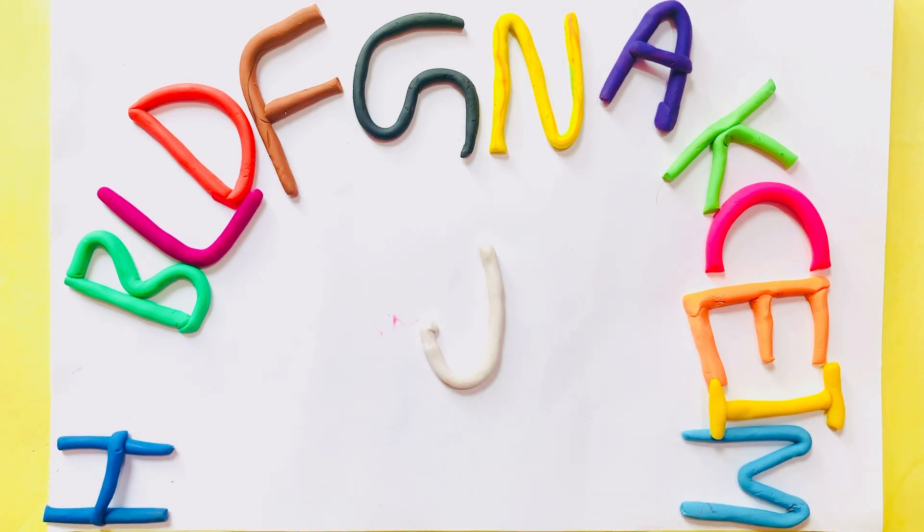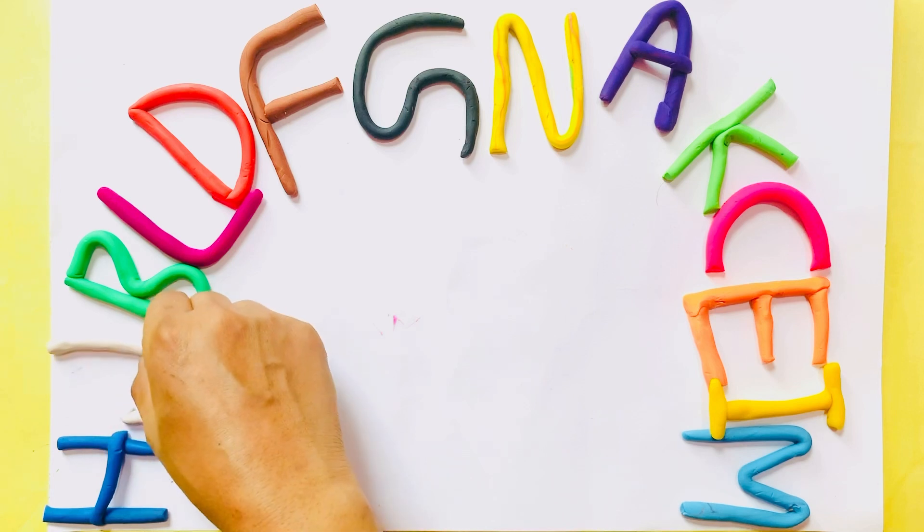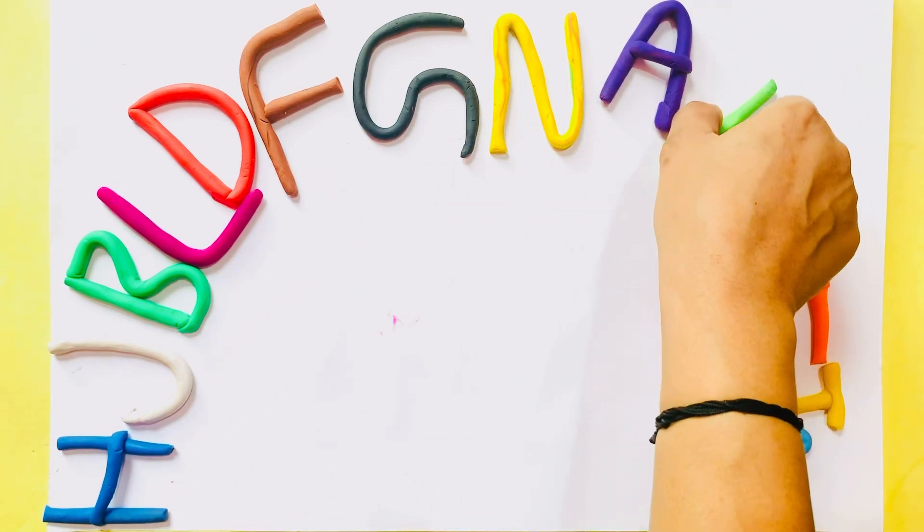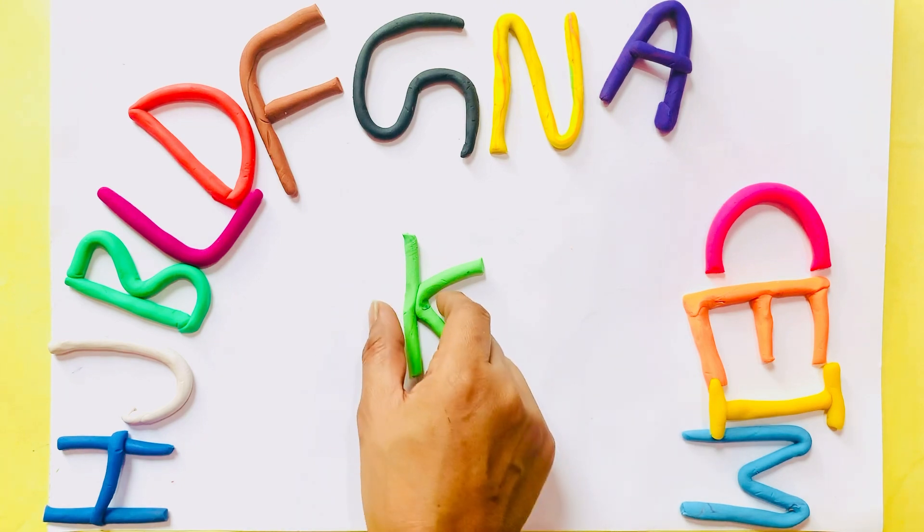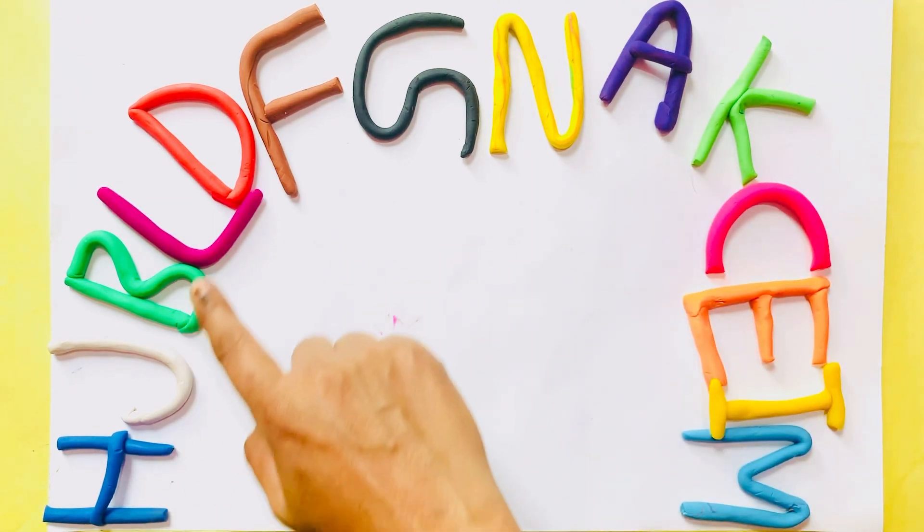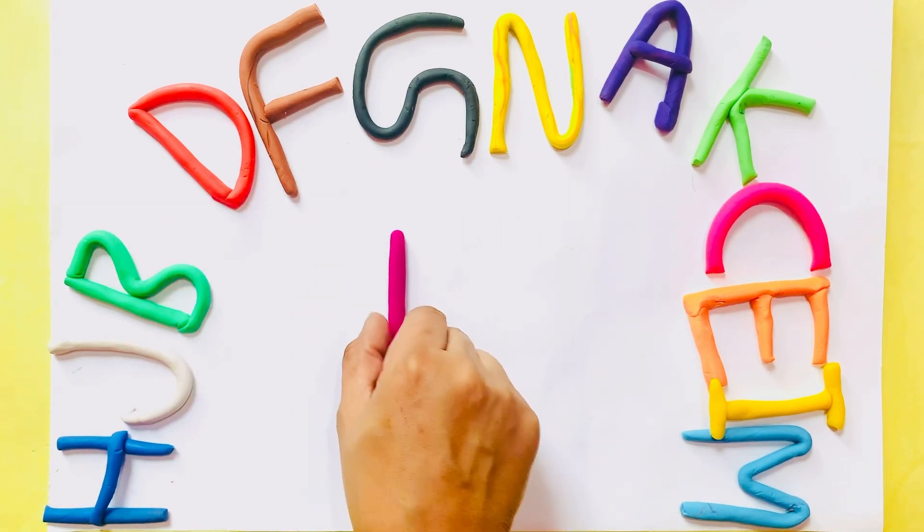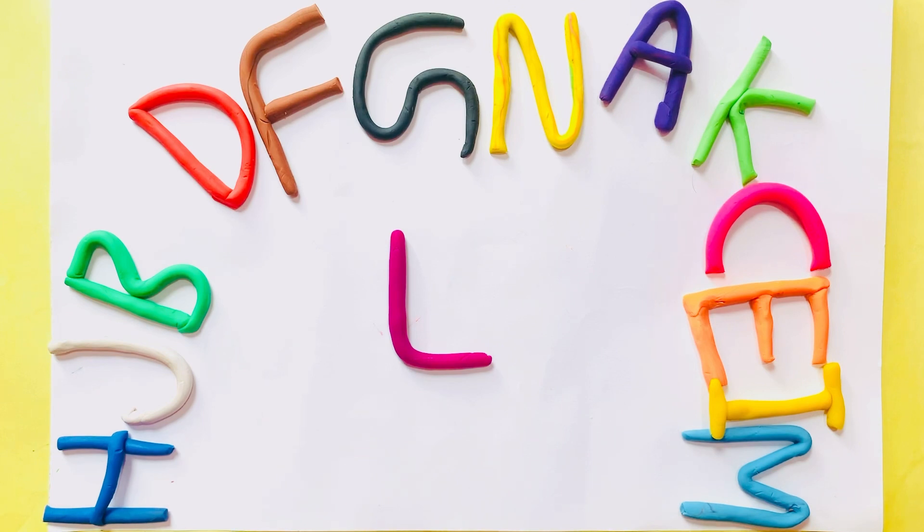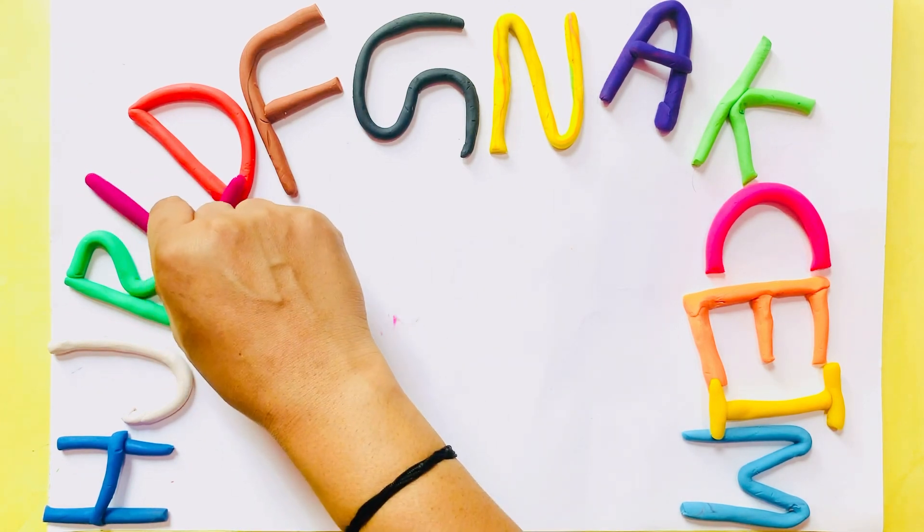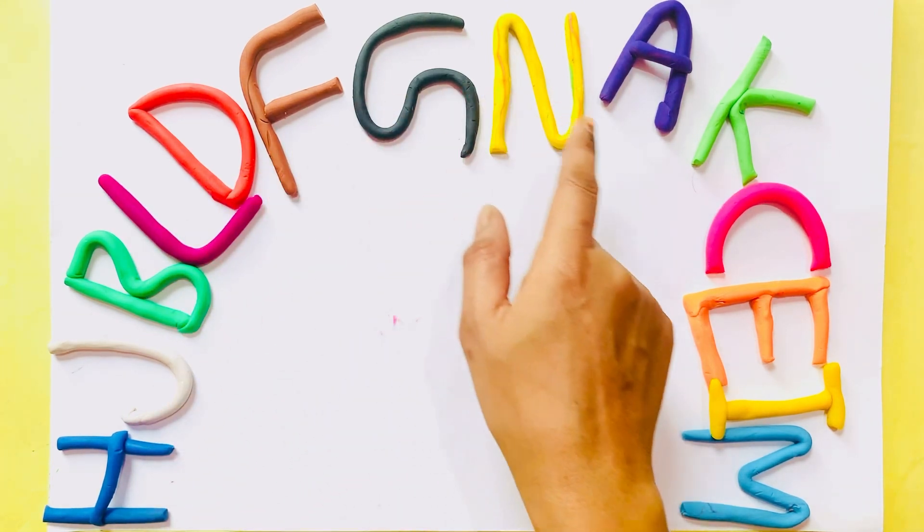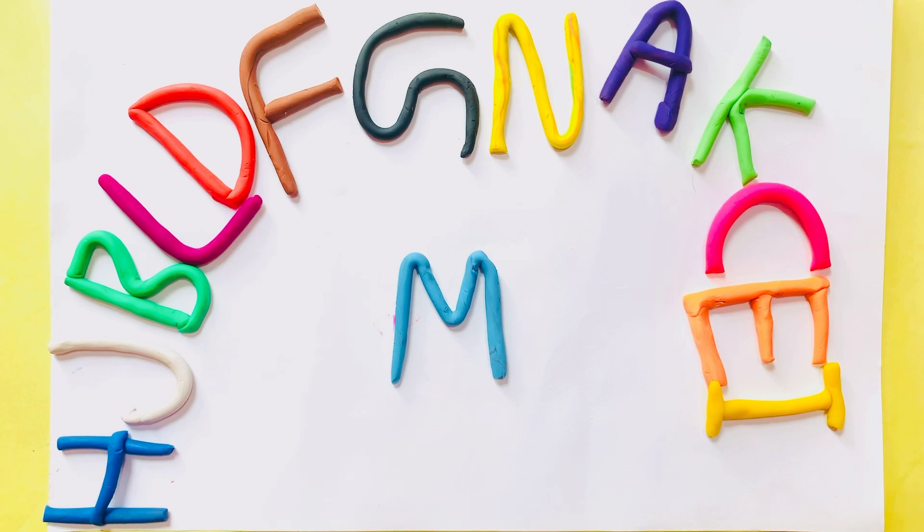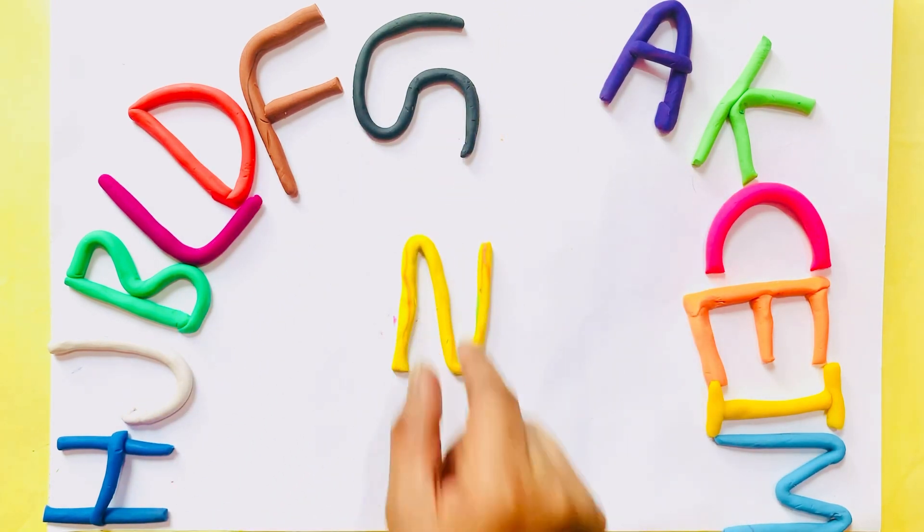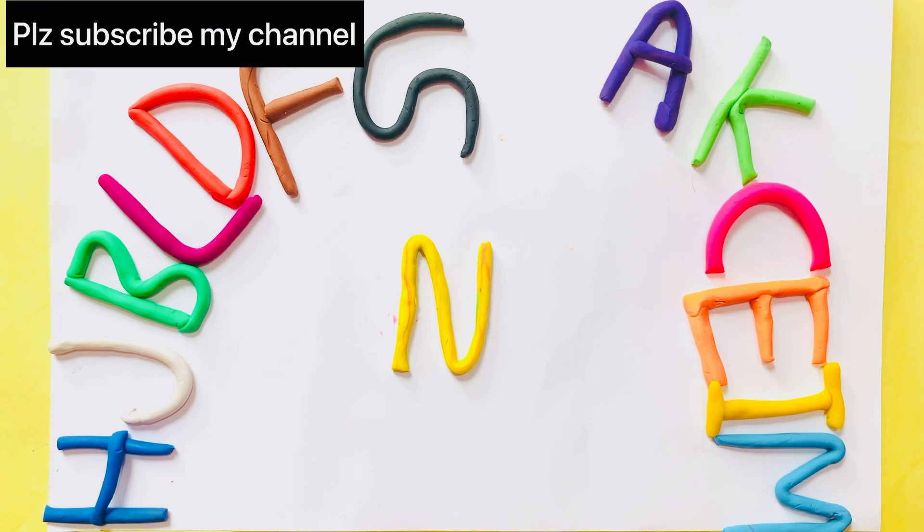J, J, J for jug, J for jug. K, K, K for kite, K for kite. L for lion, L for lion. M, M, M for mango, M for mango. N, N for nest, N for nest.